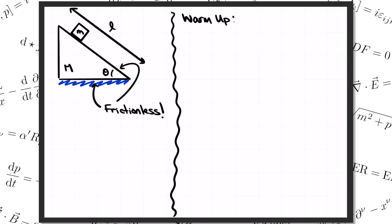As a warm-up, let's quickly review the case where the ramp is nailed down and doesn't slide. I made another video all about that problem, which I'll link up in the corner, so you should watch that and then come back to this one if you need more of a refresher. We start with the free body diagram. There are only two forces acting on the block: gravity mg pulling down, and the normal force N from the ramp pointing perpendicular to the surface.